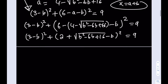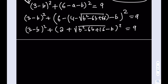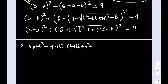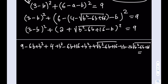Now we can go ahead and expand this and get an equation in b. Expanding (3 minus b)² gives 9 minus 6b plus b². For the second squared term, treating it as (x + y + z)², we get the sum of squares plus twice the cross products: that gives b² minus 6b plus 16 plus 4 minus 4b and then minus 2b times √(b² − 6b + 16). The whole thing equals 9.